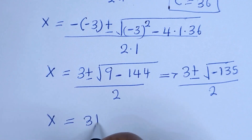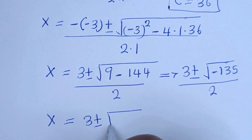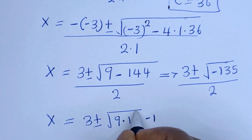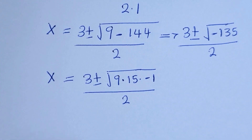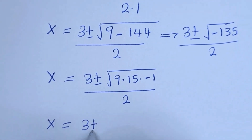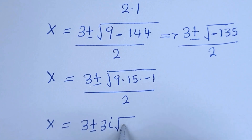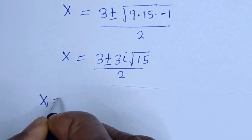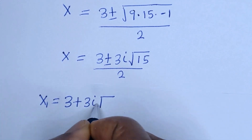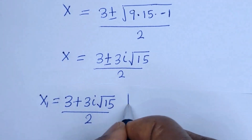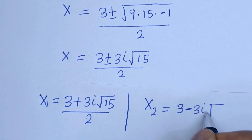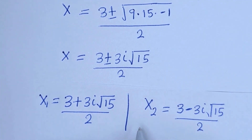S is equal to 3 plus or minus the square root of negative 135. The square root of negative 135 can be written as the square root of 9 multiplied by 15, multiplied by negative 1. The square root of 9 is 3, and the square root of negative 1 is i, so we get S equal to 3 plus or minus 3i times the square root of 15, all over 2. Therefore S1 equals (3 plus 3i√15) over 2, and S2 equals (3 minus 3i√15) over 2.